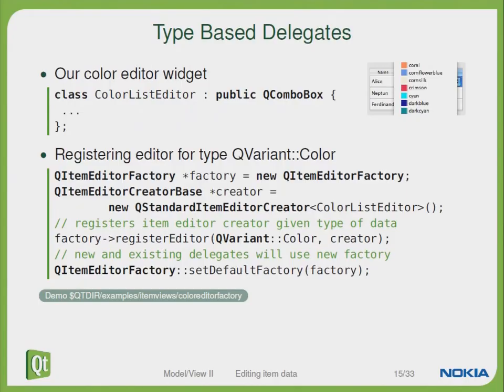We can also create type-based delegates. For instance, if you have a specific type of data — here a color — you can define your own delegate editor for colors. In this example we register an editor for the type QVariantColor, so everything which is of this type will use this editor.